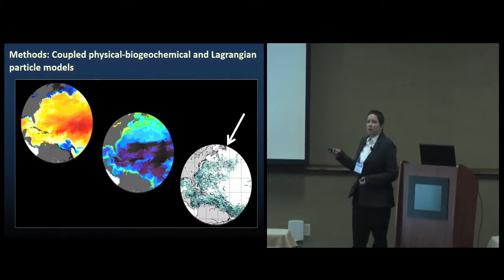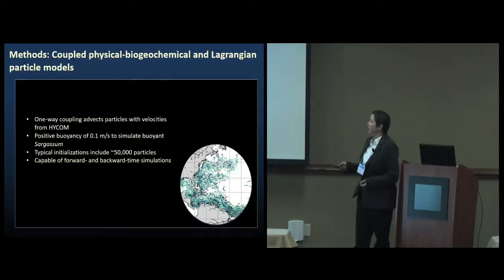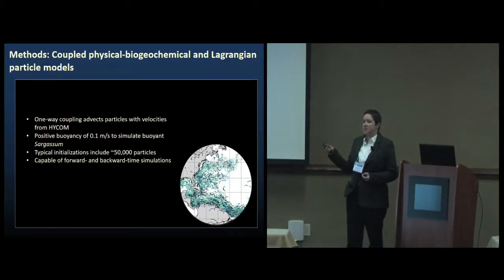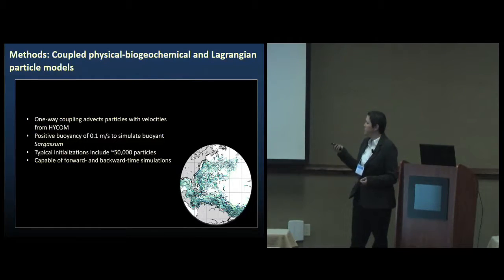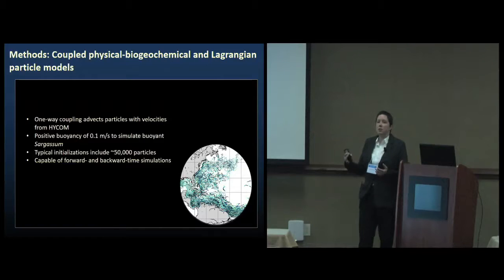And then the third model here is the Lagrangian particle model. That's packaged with HYCOM, and there's a one-way coupling that affects these particles based on the velocities from the HYCOM physics. I've added a positive buoyancy to these particles to simulate the floating sargassum, so it lets these particles move as fully 3D particles. They're not forced to be at the surface, but they have a high buoyancy. Some of my typical initializations include about 50,000 particles. The nice thing about this particle model is that it can be run both online as HYCOM is running, but it can also be run post-fact using output from HYCOM. That lets me run my particles forward or backward in time without having to rerun the whole coupled model system.